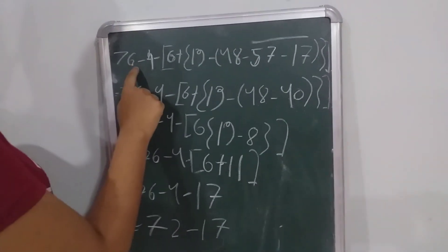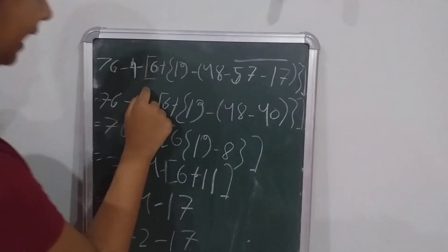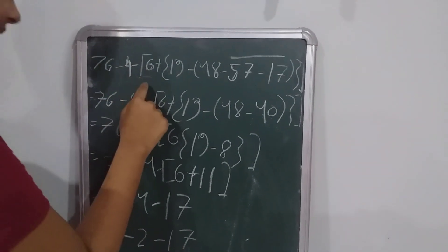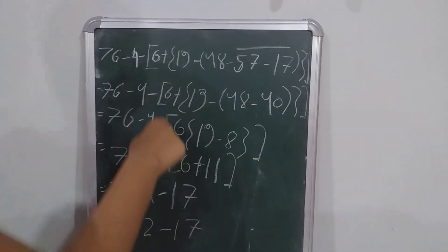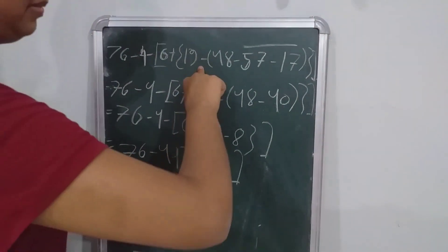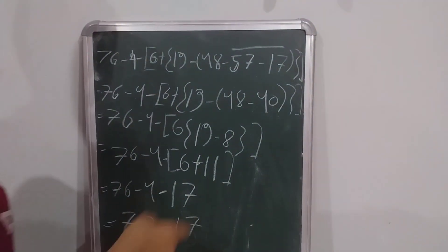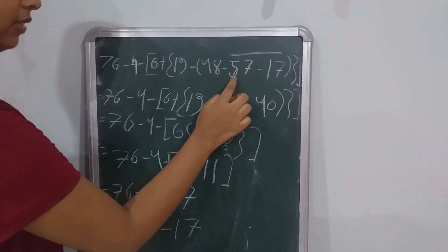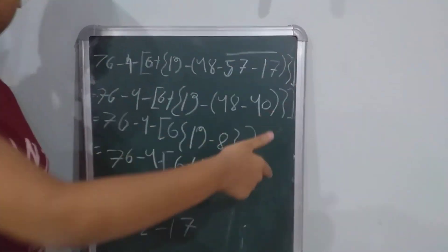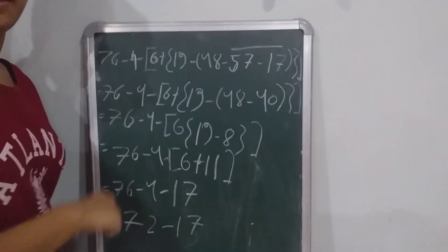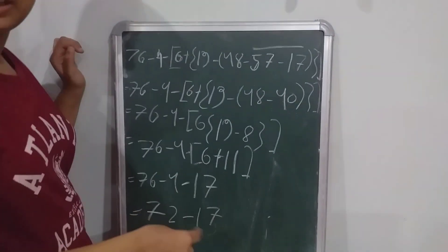When I say 76, I say 4, 2, bracket, 6, plus second bracket, 19, minus first bracket — in first bracket: 48, 57, 17 — first, second, third bracket close. Then never move. When I say the answer is, I say this is the first bracket.